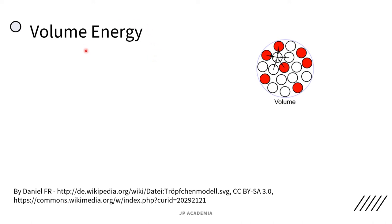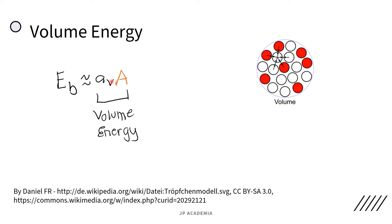Let's start with the first term, which is the volume energy term. If you add nucleons to a nucleus, the binding energy tends to increase. Therefore, we have this first term which refers to the volume energy, wherein Av is a constant or coefficient and A is the atomic mass number. As the volume of the liquid drop increases, the total binding energy tends to increase as well. This is proportional to A, the number of nucleons. The volume term shows that if the nucleus is big, more protons and neutrons can hold each other through the nuclear force. The volume is proportional to the mass number A, which is proportional to the radius R cubed.